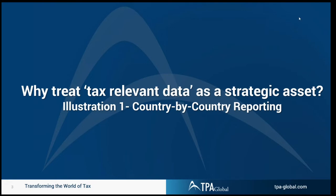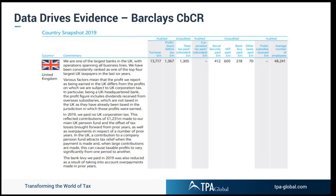This is an illustration of where taxpayers are sharing much more data than they used to with tax authorities. This is a slide on Barclays taken from their website. Barclays as a bank files a public CBCR, and this page addresses the UK. All the country-by-country data is listed on the website. In 2019, they paid no UK corporation tax, although they have been paying a lot of other taxes in the UK.